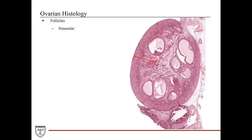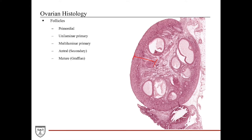Starting at puberty, when the hypothalamus starts to release gonadotropin-releasing hormone, or GnRH, the basophils in the anterior pituitary will start to secrete follicle-stimulating hormone, or FSH, which then starts to stimulate several follicles every month to begin growing. During the reproductively active years, a variety of follicles in different stages of growth are observed in the ovarian cortex. Based on characteristic morphologies, there are different types of identifiable ovarian follicles: the unilaminar primary follicle, multilaminar primary, the antral or secondary follicles, the mature or Graafian follicles, and the atretic follicles.